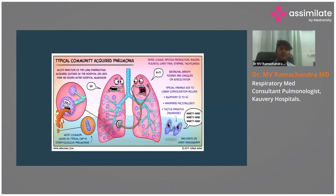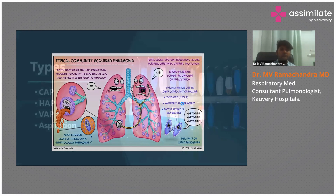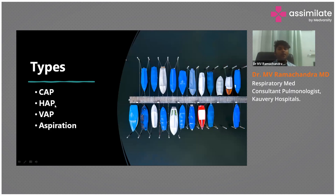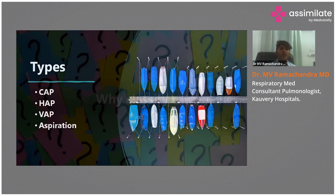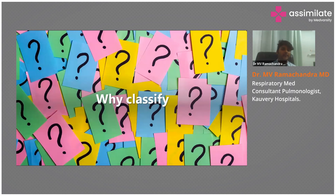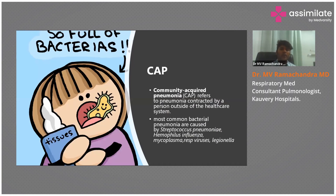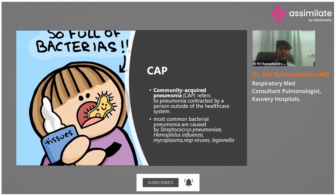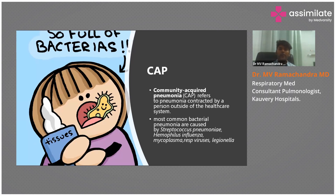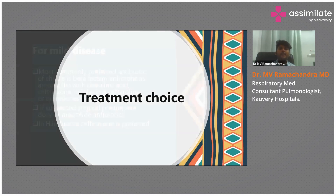Types of pneumonia: community-acquired pneumonia (CAP), hospital-acquired pneumonia (HAP), ventilator-associated pneumonia (VAP), and healthcare-associated pneumonia (HCAP). The classification matters because organisms differ. In the community, the bacteria commonly seen are Streptococcus pneumoniae, Haemophilus influenzae, Mycoplasma, viruses, and Legionella — these are the spectrum causing CAP.